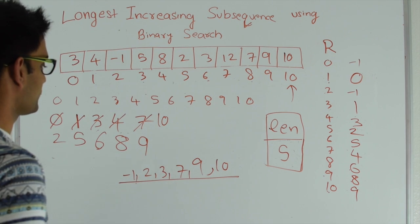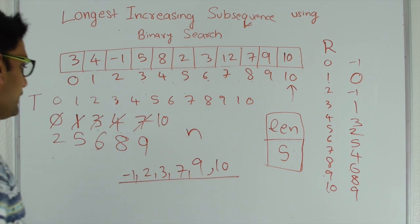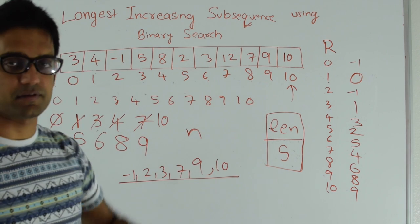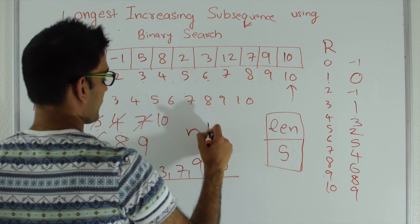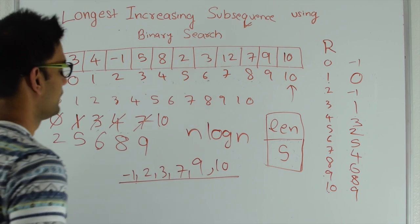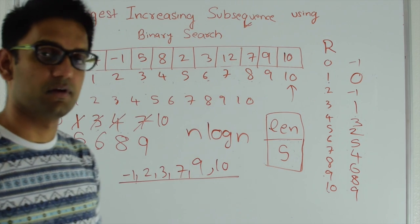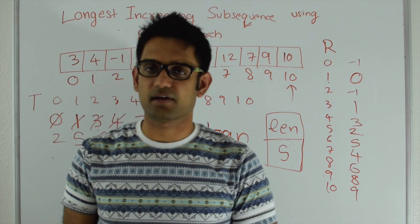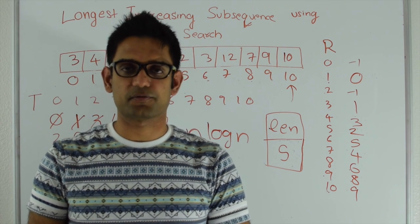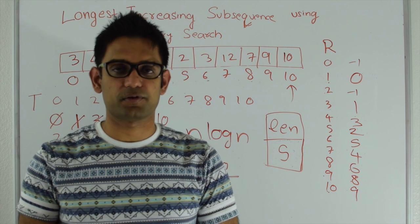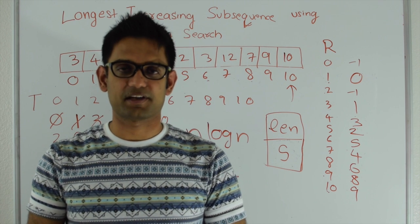The runtime complexity is straightforward. For every element, in the worst case we do a binary search in an array of length n, so the runtime complexity is O(n log n). The space complexity is O(n) to store the T and R arrays. Hopefully this helps you understand how this algorithm works. The code is in the description. Please like, share, and comment on this video, check out my GitHub and Facebook page. Thanks for watching.